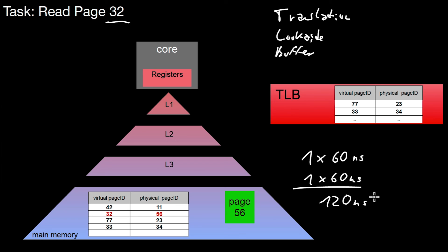These numbers maybe don't look so scary — it's 120 nanoseconds, who cares, right? But if you have many, many accesses in a computer program and a data-managing system like that, those numbers may add up pretty quickly and may really slow down your computation. So it's important to be aware of that effect.